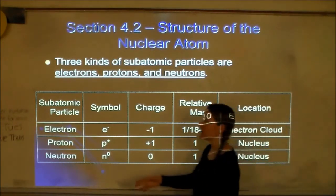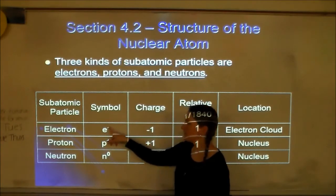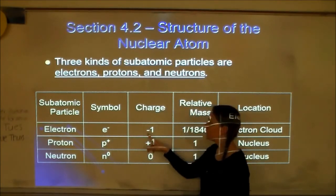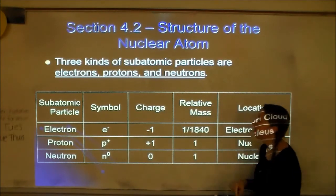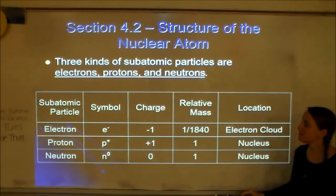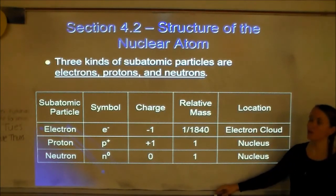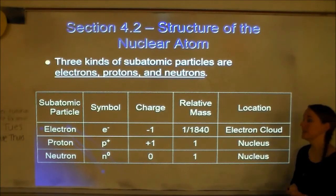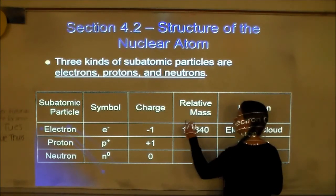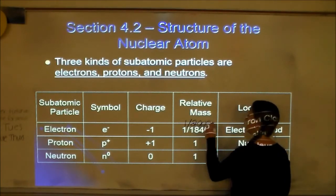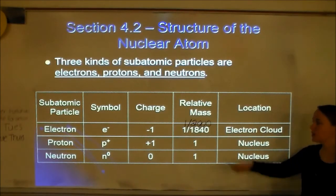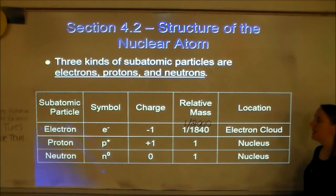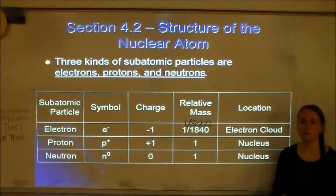The first one is the electron. The symbol is E with a little negative because the charge is negative one. The relative mass of an electron is 1/1840. However, if you can just remember 1/2000, I will let you round — that's a very large rounding, but I'll allow it. The location is the electron cloud.